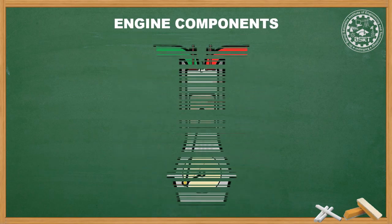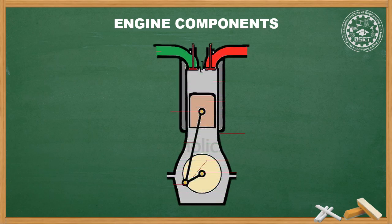Let us start with engine components. The figure shows a single-cylinder spark ignition engine. Its main components are described as follows. Number one is the cylinder block, which is the main supporting structure to which various engine components are fitted and supported. Next is the cylinder, which is a cylindrical closed container in which the piston travels in reciprocating linear motion. The cylinder is supported by the cylinder block, and at the top end it is covered by the cylinder head. The space enclosed between the upper part of the cylinder and the top of the piston during combustion is called the combustion chamber.